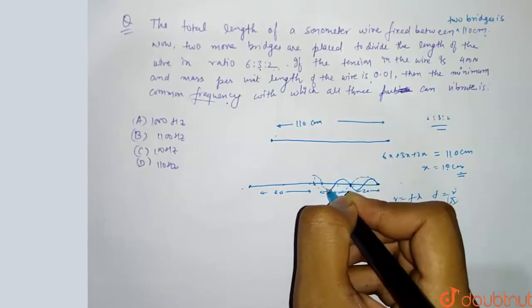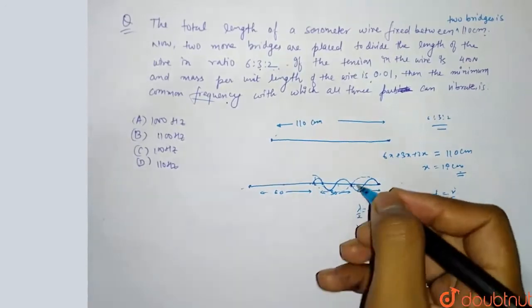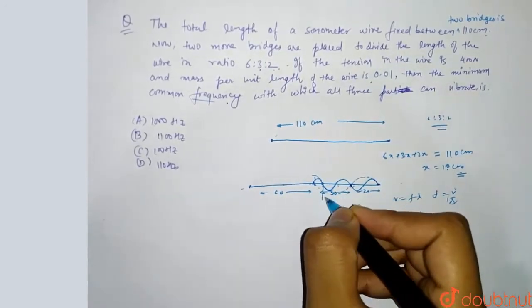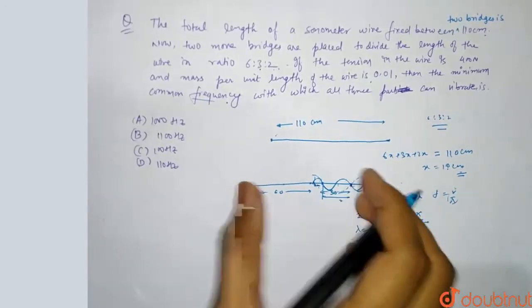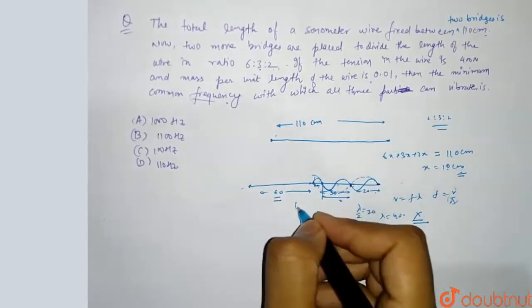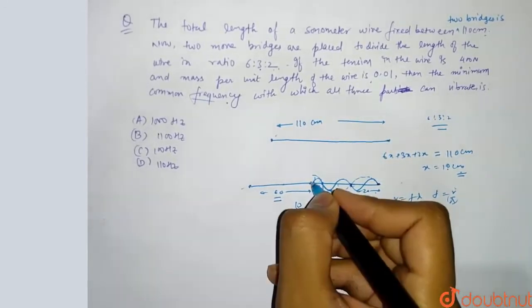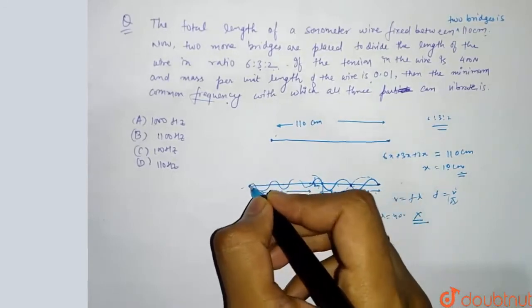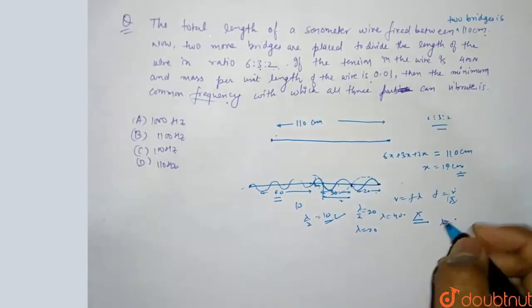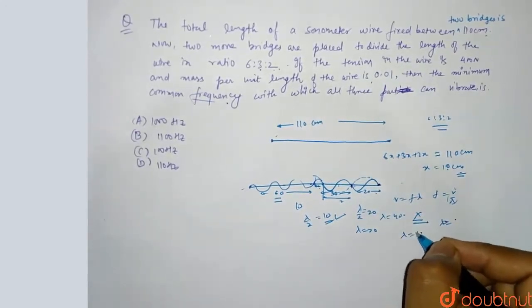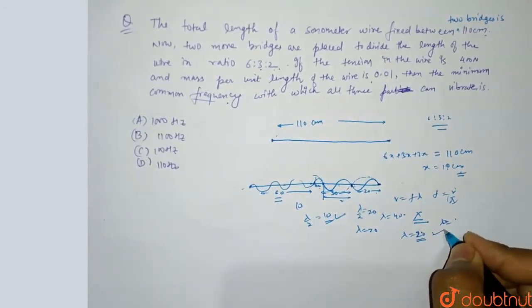Diagram so this is 20 and this is 10 lambda by 2 and this is 50, so this is a node now. Because this is 60 and this is 10 and this is lambda by 2, the node is 10 multiple. This is 2 nodes, so lambda equals to 20 cm. That is the appropriate wavelength.